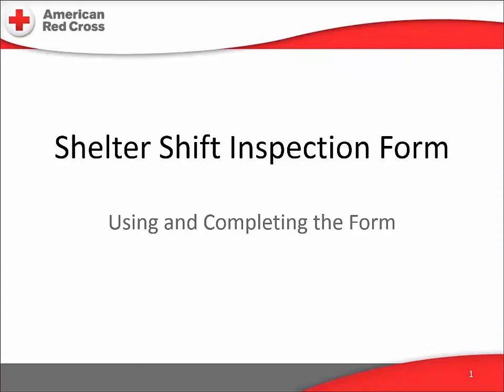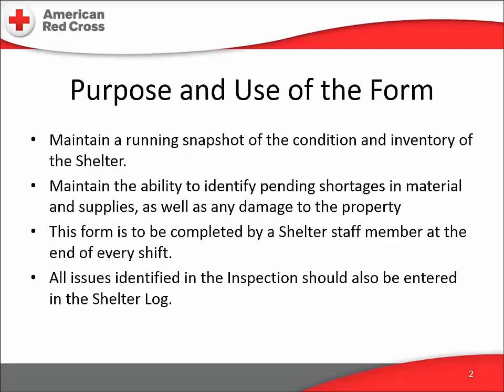This video is part of a series intended to give an overview of the forms used by the American Red Cross in our shelter operations. The shelter shift inspection form is used to record a snapshot of the shelter condition twice a day at each shift change. We normally run our shelters on two 12-hour shifts, and the incoming and outgoing shift supervisors will do a walk-around together and chat about what happened in the last 12 hours. This form records the observations made by these two supervisors.